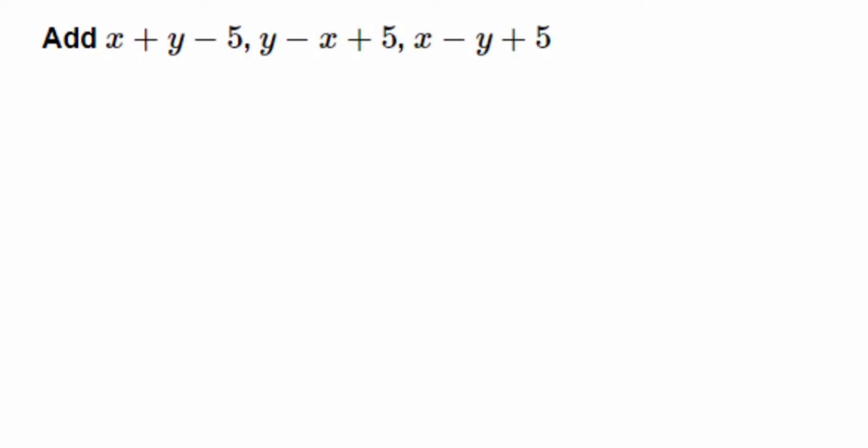Hey everyone, here's a question on algebraic expressions. The question is to add x plus y minus 5, y minus x plus 5, and x minus y plus 5. I'm going to show you both ways: the horizontal method and the column method.